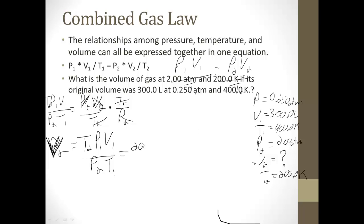Now we can plug in all these crazy numbers. T2, 200 kelvins. P1, 0.250 atm. V1, 300 liters. Over P2, 2.00 atm. T1, 400 kelvins. Kelvins cancel, atmospheres cancel, and I'm left with liters. So now I can just do some math: 200 times 0.25 times 300 divided by 2 divided by 400, and I'm left with 18.75.